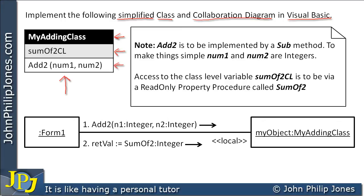We have a method called 'add to' that takes in parameters 'number 1' and 'number 2', which are going to be integers. Looking at the note, 'add to' is to be implemented as a sub method, and 'number 1' and 'number 2' are both integers. When we go into the code, this particular variable is going to be declared as a private class-level variable.